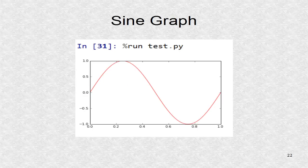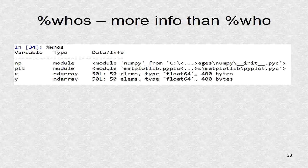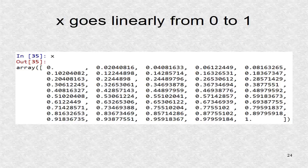This shows the sine graph over one period. Percent whos shows more information than percent who. We can also check variables — for example, the variable X shows a line which goes from 0 to 1.